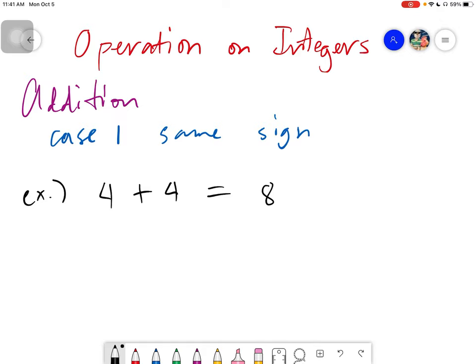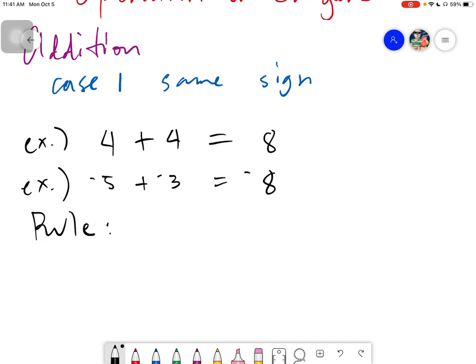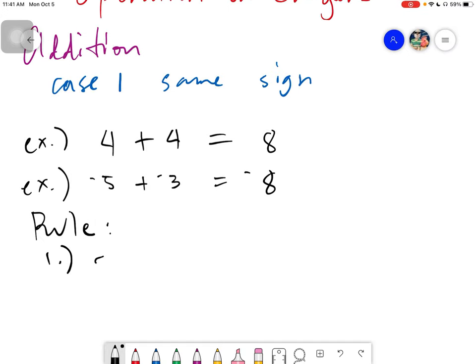So, the rule when it comes to adding same sign would be this one. Another example: Negative 5 plus negative 3. The answer is just simply negative 8. The only rule that we will follow here would be, number 1, add the numbers, and the next one is we copy the sign.